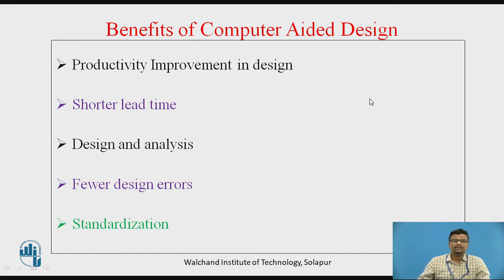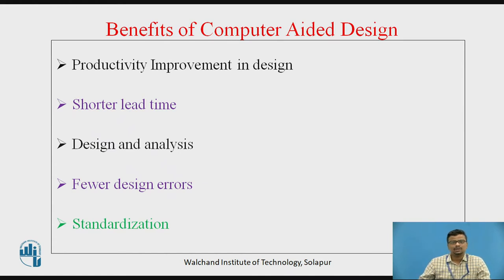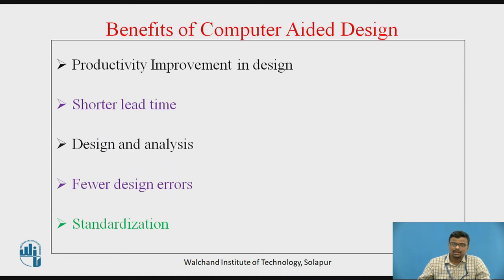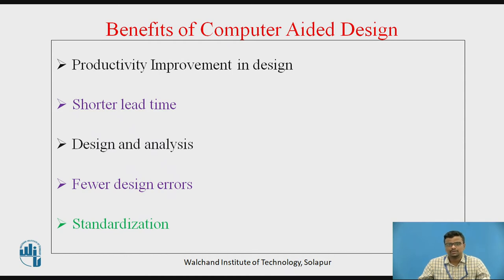First we will discuss the benefits of the computer-aided design system. There are different benefits which are very important with respect to CAD. We can refer to the computer-aided design system to create a 3D model of any mechanical component, or to have the engineering analysis of any mechanical component. We are not going towards manual methods because there may be chances of errors. By using the assistance of computers or softwares for 3D modeling, engineering analysis, or meshing of any component, we avoid those errors.